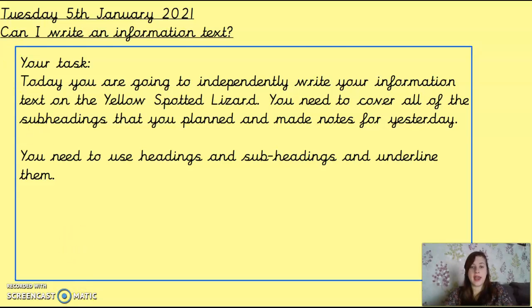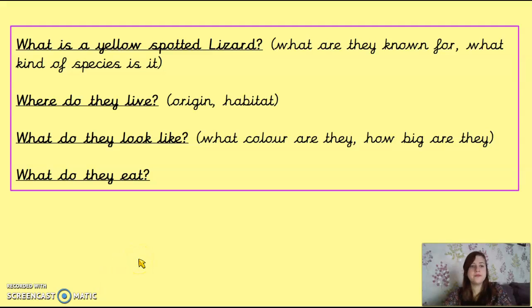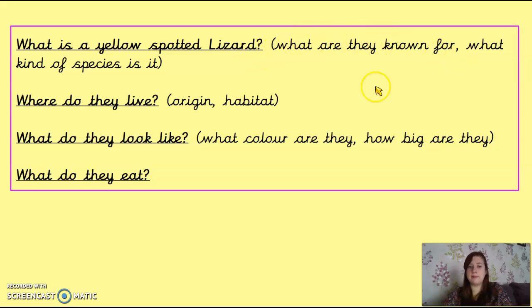So you should have a heading of Yellow Spotted Lizard, then leave a gap, and underneath it: What is a yellow-spotted lizard? Underline that, and write a paragraph — it doesn't have to be a really long paragraph — about what a yellow-spotted lizard is. Remember those things in brackets, but also anything that you think doesn't fit in the other three subheadings. Then do the second, third, and fourth subheadings, like we did with our lighthouse and refugee information texts.